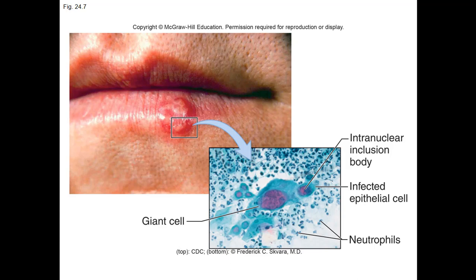Transfer can occur via sex or contact with viral lesions or virally infected saliva. HSV can infect almost any tissue, including skin regions on other parts of the body. Antiviral treatments — acyclovir and penciclovir — inhibit the HSV DNA polymerase and can shorten the outbreak periods. Sunscreen to prevent sunburn reduces the risk of reoccurrences.